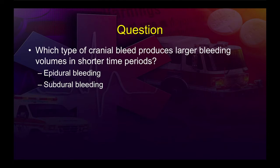To get us started, there's a direct relationship between understanding anatomy and understanding the pathophysiology that results from injuries. Here's a question covered in the EMT Basic course: which type of cranial bleed produces larger bleeding volumes in a shorter time period — essentially which bleeds faster with quicker onset of signs and symptoms — epidural bleeding or subdural bleeding?